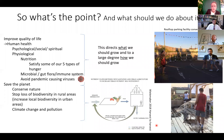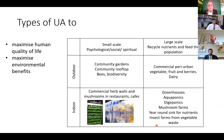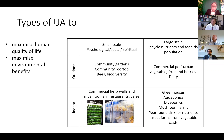We can summarize how to maximize human quality of life and environmental benefits simultaneously with different types of urban agriculture. We need small-scale for psychological, social, and spiritual purposes — outdoors as community gardens, rooftops, bees, biodiversity; indoors as commercial herb walls and mushrooms in restaurants and cafes. Then large-scale to recycle nutrients and feed the population — outdoors as commercial peri-urban vegetable, fruit, berry farms, and also dairy milk production which needs to be outside the city.